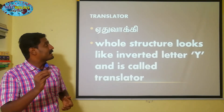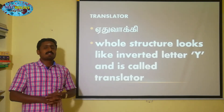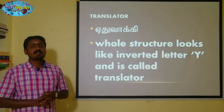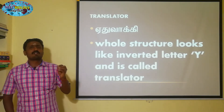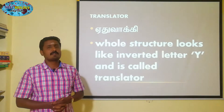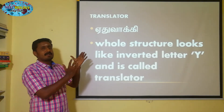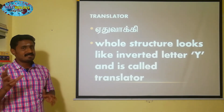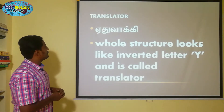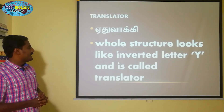In Tamil, it is called Eiduwaki. The translator is the name of the total process. Eiduwaki is the name of the Kalotropics. The whole structure looks like a letter Y, and it is called the translator.